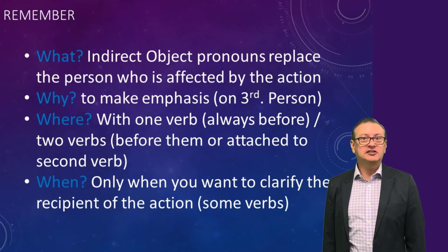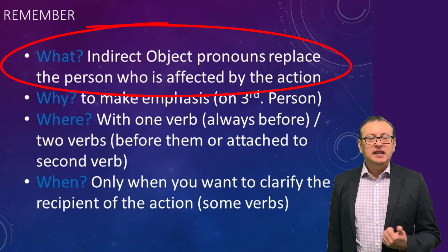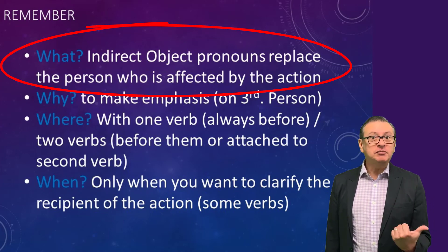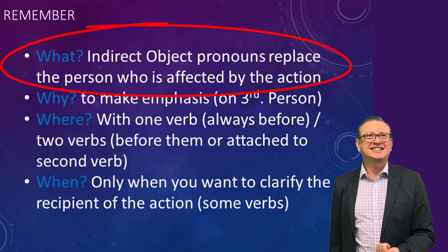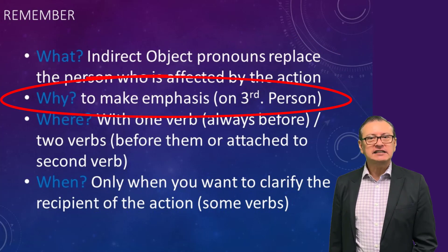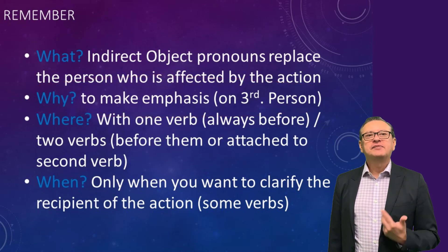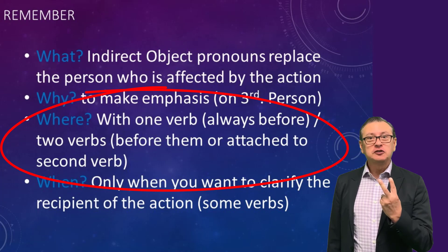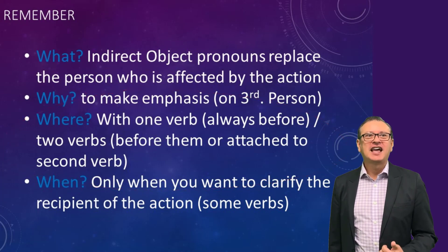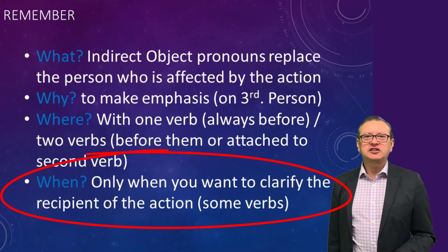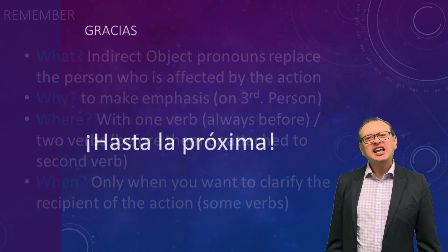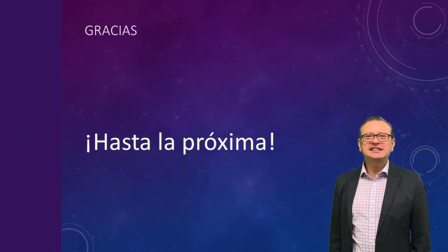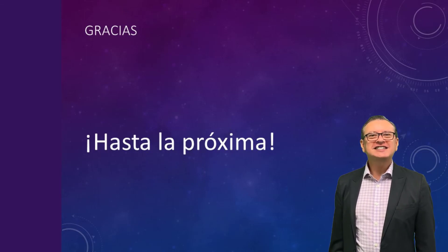Let's clarify and summarize all the uses of the indirect object pronouns. The indirect object pronouns replace the recipient, not the object — they replace the person who will receive the action. Use 'a' to emphasize, particularly in the third person singular and plural. For placement: one verb — before the verb; two verbs — before the verb or attached to the second verb. Use the pronoun only when substituting the person to whom the action is being performed. I hope you understood this concept. Thanks for watching — please click the Advantage logo to subscribe. Muchas gracias. Nos vemos hasta la próxima.